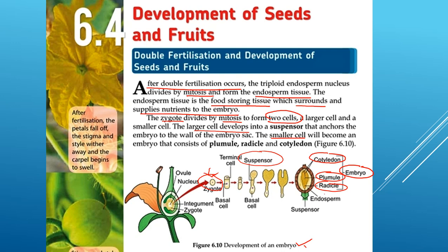This is the endosperm — you can see it here in the figure. The suspensor is here, and the suspensor anchors the embryo to the wall of the embryo sac.